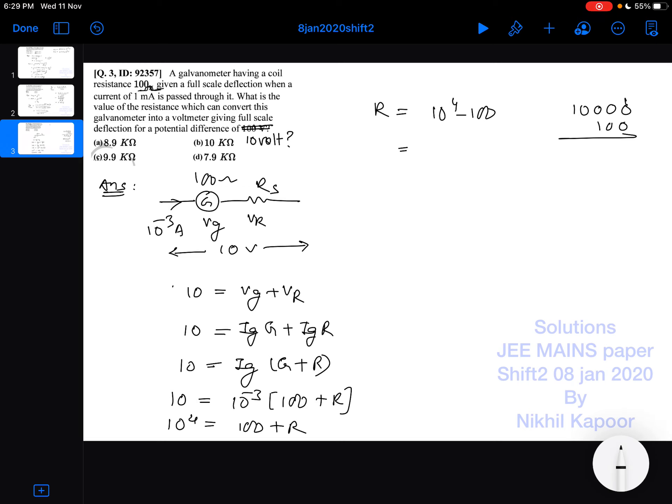So if I take one carry here, this will be 0, this will be 0, and 10 minus 1 will be 9 and 9. So it will be 9900, which is 9.9 into 10 to the power 3 ohm, or 9.9 kilohm. Thank you.